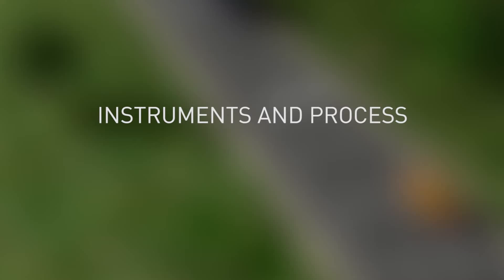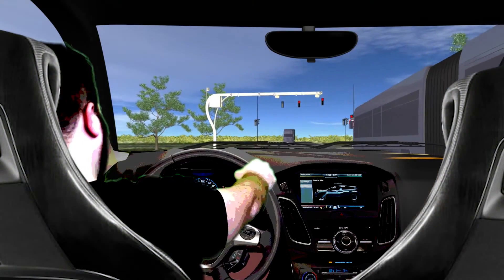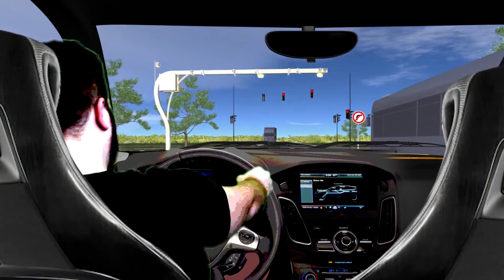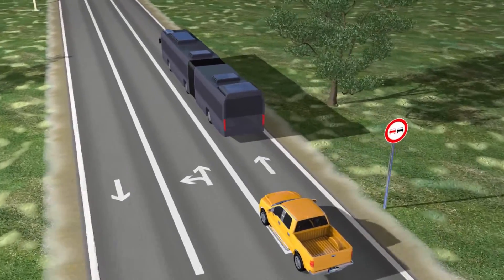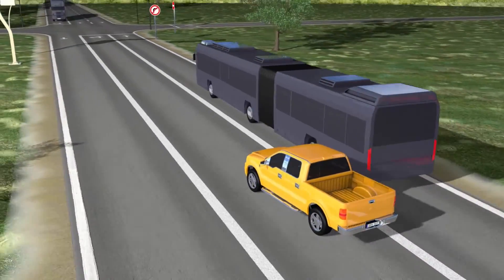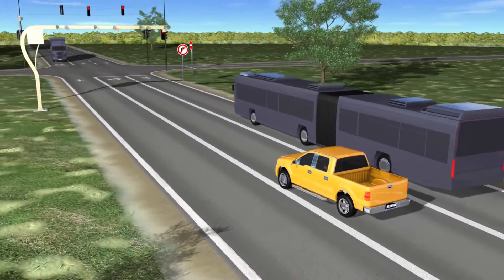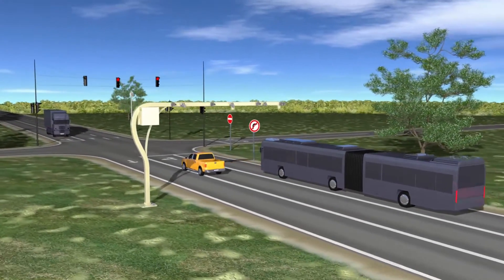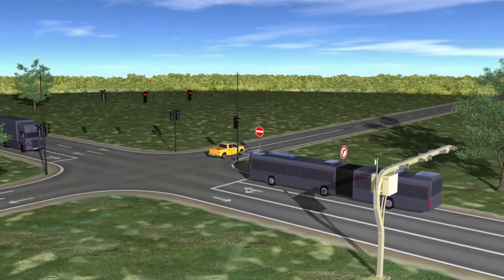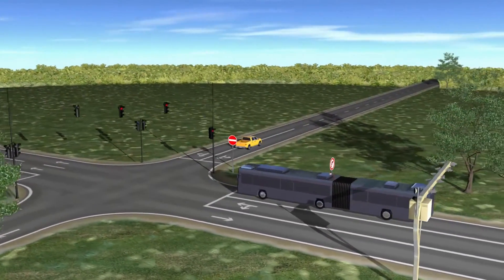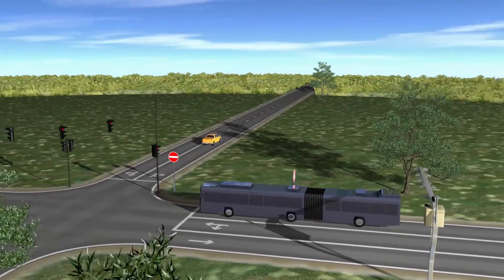Besides basic functions, Traffic Spot is also able to register various types of violations. The following single scenario illustrates a number of traffic violations and their detections. The demonstrating yellow vehicle is at fault for speeding, solid line crossing, red light crossing and moving in the wrong direction.